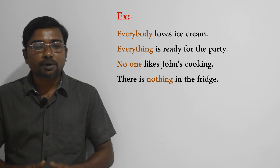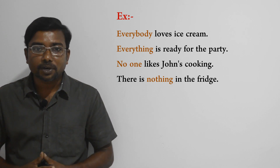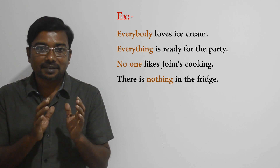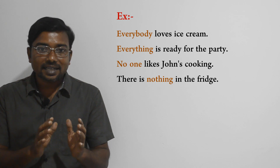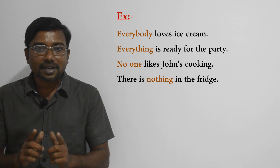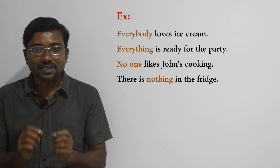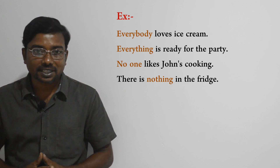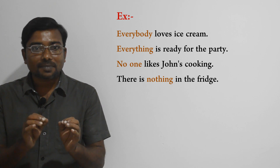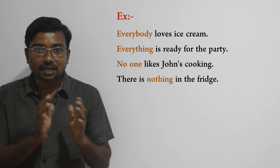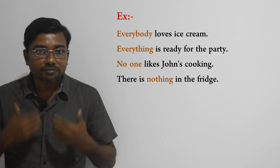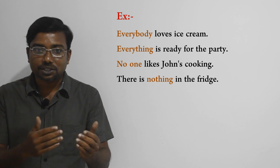When you look at the first three examples — everybody, everything, no one — they stand in the sentence as a subject. But in the last example, 'nothing' acts as an object of the sentence. So it's clear that indefinite pronouns can act as either a subject or an object in the sentence, and they refer to unspecific things or people.